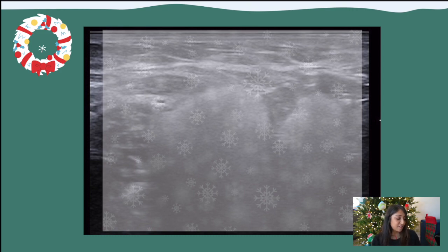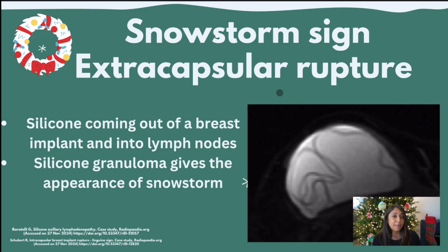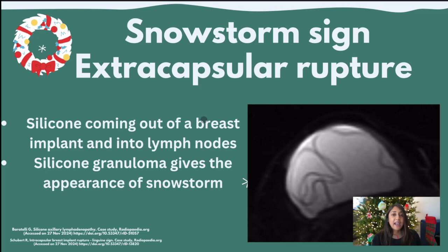The hint is a bunch of snowflakes — this is actually a snowstorm appearance of extracapsular silicone. Free silicone within the breast causes a snowstorm appearance because of the artifact between the ultrasound and the silicone granulomas. When you have free silicone within the breast or taken up by the lymph nodes, you get that classic appearance with posterior shadowing — the sound waves cannot penetrate through it. This is classically called the snowstorm appearance.